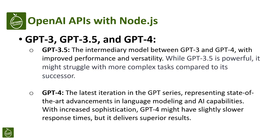GPT-3.5 is an intermediary model between GPT-3 and GPT-4, with improved performance and versatility. While GPT-3.5 is powerful, it might struggle with more complex tasks compared to its successor. GPT-4, the latest iteration in the GPT series, represents state-of-the-art advancements in language modeling and AI capabilities.